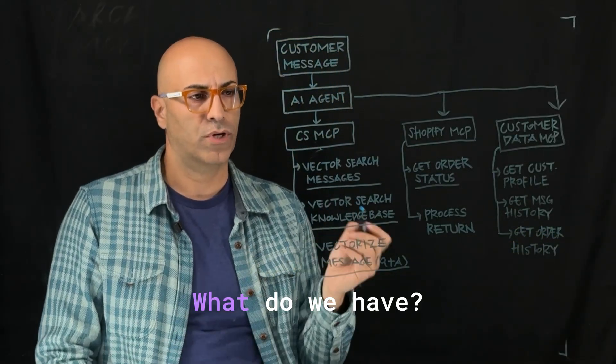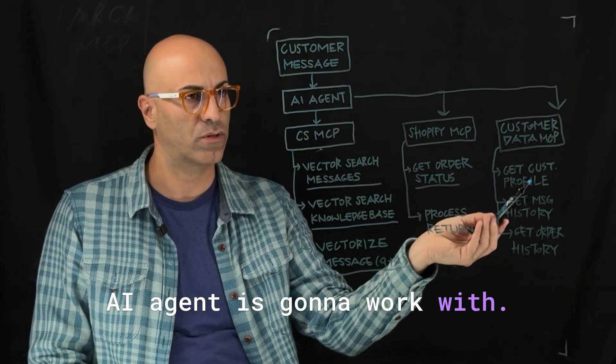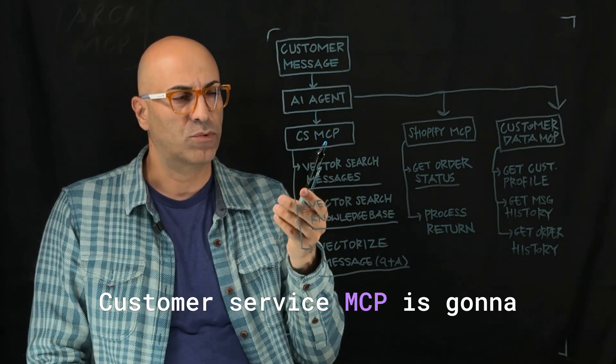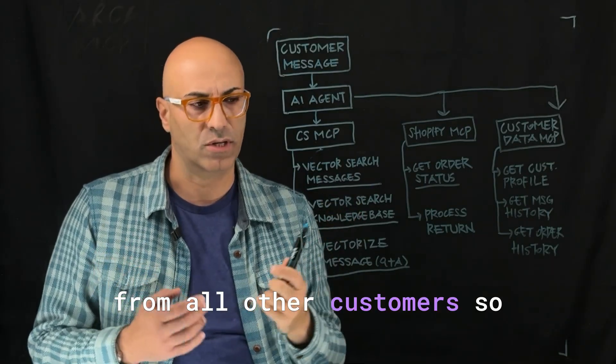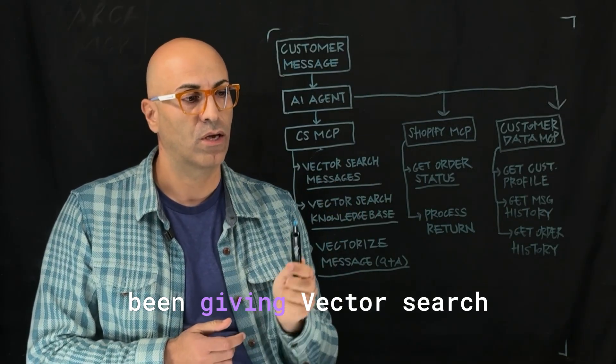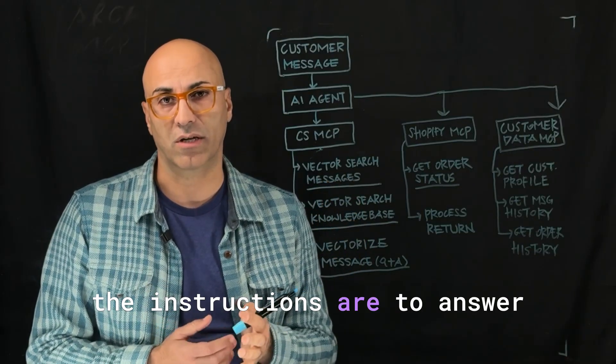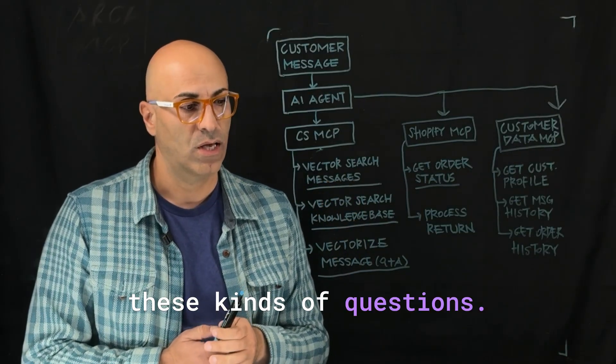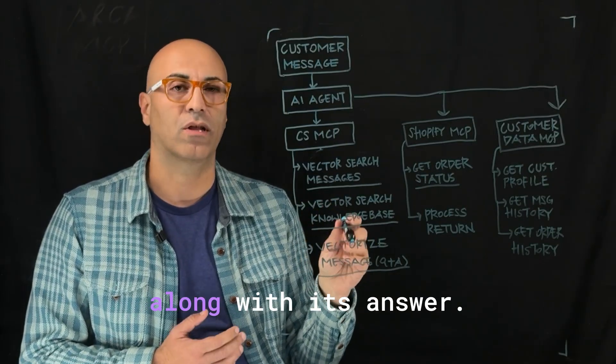So now let's take a look, what do we have? We have three MCP servers that our AI agent is going to work with. Customer service MCP is going to give us vector search messages from all other customers so that we can see what kind of answers the team has been giving, vector search knowledge base to see what the instructions are to answer these kinds of questions, and then vectorizing this message, the question along with its answer.